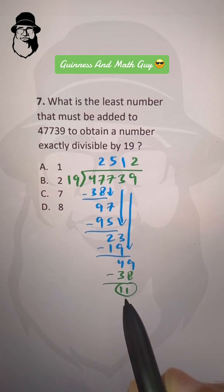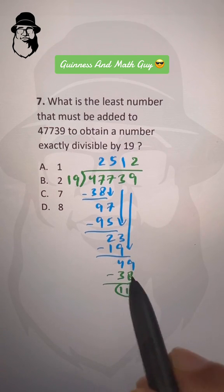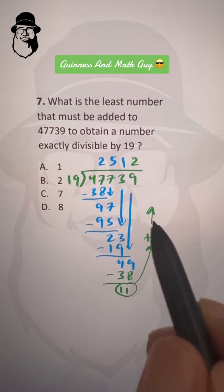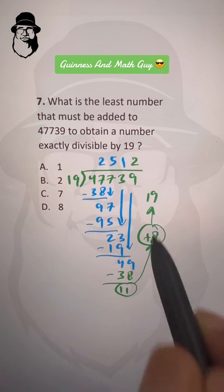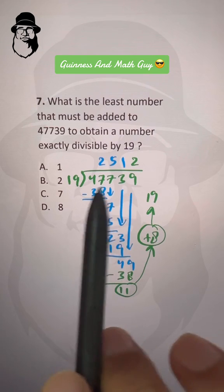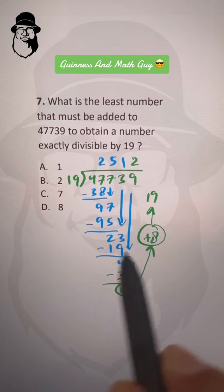Now, what number should I add to 11 to get 19? It's plus 8, and I get 19. So this number we have to add to make this a perfect multiple of 19. So that's our answer.